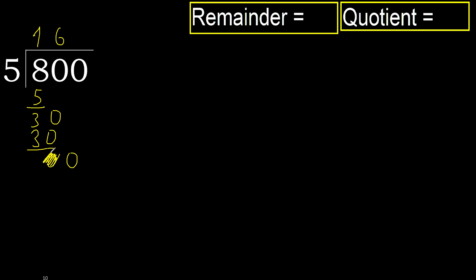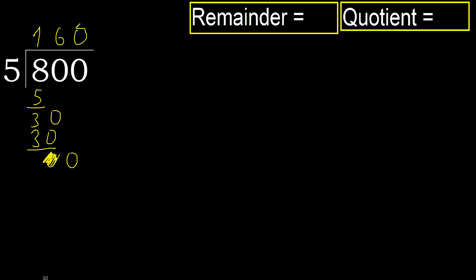Eliminate the 0 on this side. 0 is less, therefore next — there is no number, therefore finished. Therefore complete. Always complete with 0, because here we finished with this number.